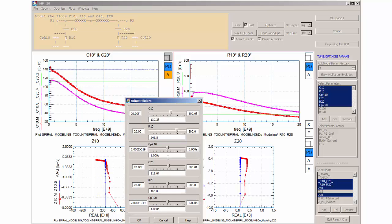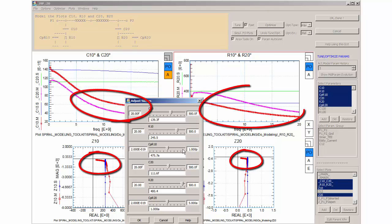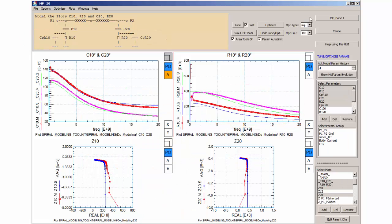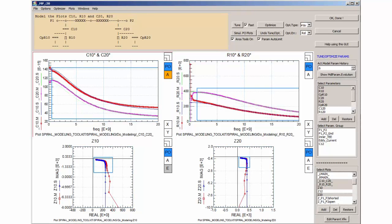Next is the modeling of the capacitor losses by tuning the service resistor R10 and R20. The trajectories in impedance plots Z10 and Z20 indicate clearly that the losses represented by these resistors are frequency dependent and so I tune also the parameters of the capacitors in parallel to the resistors, CPR10 and CPR20. An optimizer run finally finds the best fit.